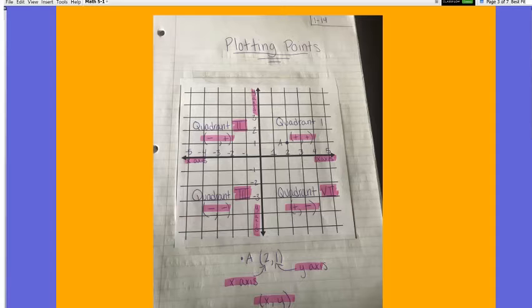So, here is our coordinate grid. If we notice here, this is our x-axis. Anything on this line right here is your x-axis. Then, I'm going to make this in a different color. Let's do this pink color. Right here is our y-axis. Anything that falls on this is our y-axis.